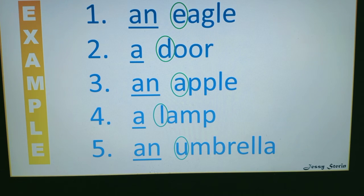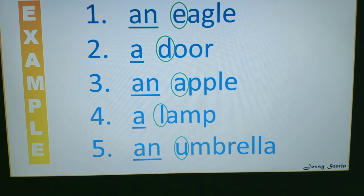Number three: __ apple. We circle the 'a' because it is a vowel, so it will become 'an apple'. Number four: __ lamp. What will it become? 'A lamp'. Number five: __ umbrella. We circle the 'u' because it is a vowel, so we will write 'an umbrella'. The concept is very simple: if the word starts with a vowel, write 'an'. If the word starts with a consonant, write 'a'.